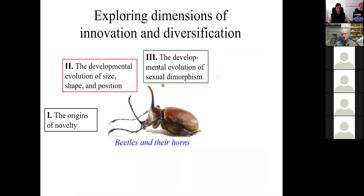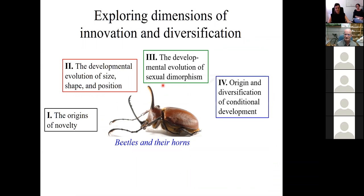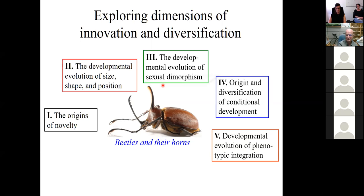But we do most of our work on beetles and their horns, where we address those same questions but also explore the origin and diversification of conditional development, environment-sensitive development. We explore various aspects in the developmental evolution of phenotypic integration. Complex traits are complex because they often involve the coordinated expression of behavior, morphology, physiology. That coordination is an evolved property and can diversify.